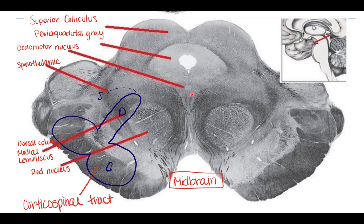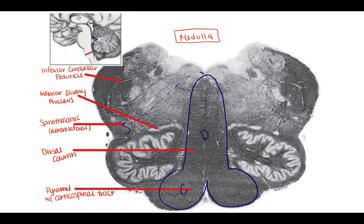You also have the oculomotor nucleus, the periaqueductal gray, and the superior colliculus in the midbrain. But for this video and a quick review, hopefully this helps you. Maybe you'll get a midbrain question, maybe you'll get the medulla dick, and I hope you get these questions right. If you like this video, please like and subscribe to my channel.